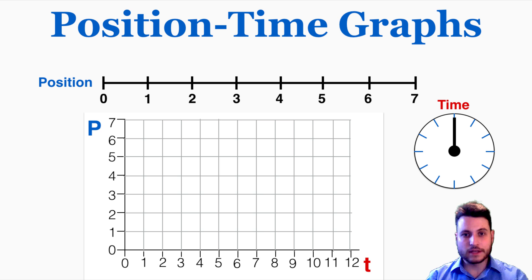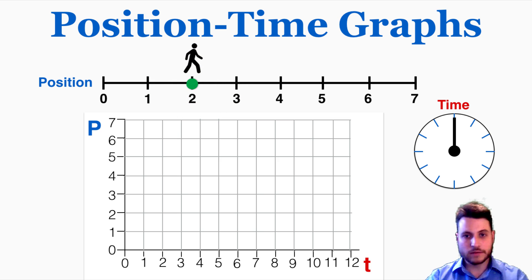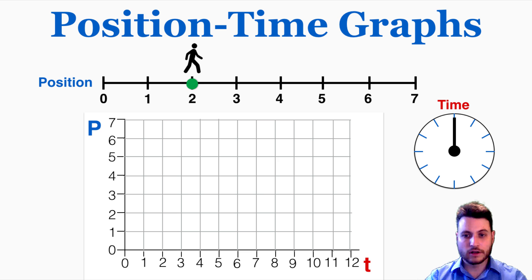Now that you've had a few examples of those graphs, I'm going to play an animation and have you try to guess what the graph is going to look like for this specific animation. I'm going to start this person off at a position of 2 and then run the clock. I'm going to play this a few times so you have a chance to draw this in your notes and see if you can guess what the position time graph will look like.